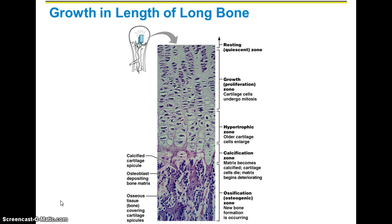When we look at growth in bone length with the cartilage undergoing mitosis in the epiphyseal plate under a microscope, growth in length of long bones has three zones we care about. The first is the growth zone, where cells undergo mitosis — these are the cartilage cells, and this is how the epiphysis pushes away from the diaphysis. This is essentially the growth plate or epiphyseal plate location.